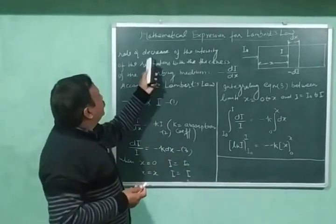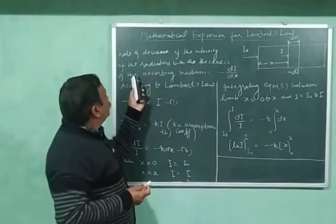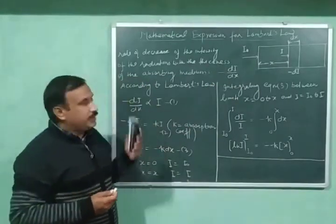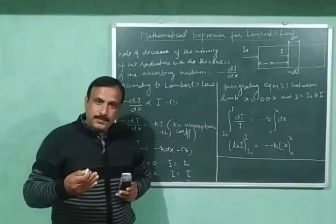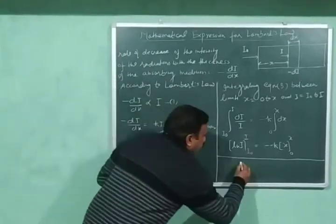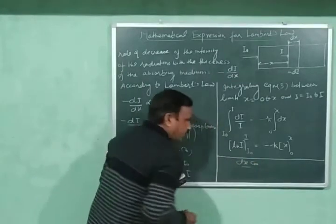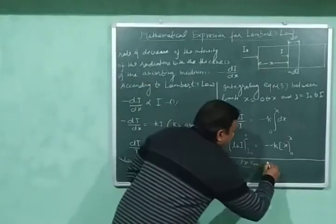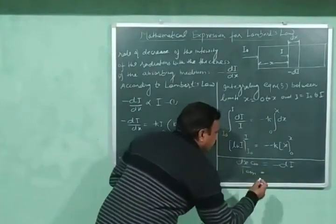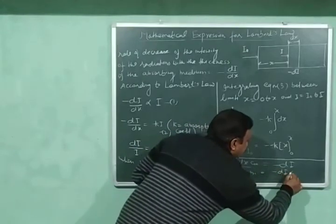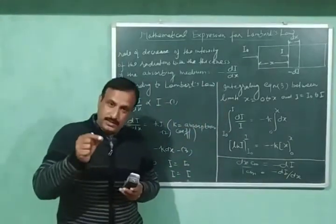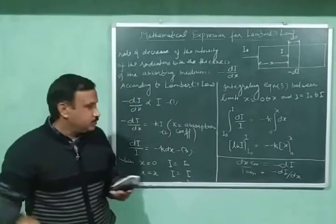The rate of decrease of the intensity of radiations with the thickness of the absorbing medium is equal to minus dI upon dx. The rate is the decrease in the intensity of radiations per unit thickness of the medium. For a thickness of dx centimeters, the decrease in intensity is minus dI. For 1 centimeter, the decrease in intensity will be minus dI upon dx. So minus dI upon dx is the decrease in intensity per unit thickness — that is, 1 centimeter — of the absorbing medium.